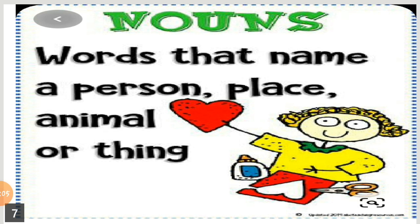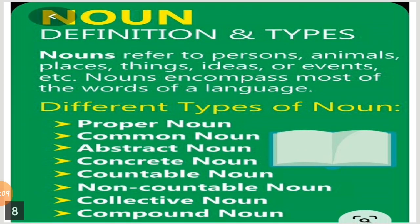All these are called nouns. Now let's move on to the types of nouns. A noun refers to persons, animals, places, things, ideas, or events. Nouns encompass most of the words of a language. The different types of noun are: proper noun, common noun, abstract noun, concrete noun, countable noun, non-countable noun, and collective noun.